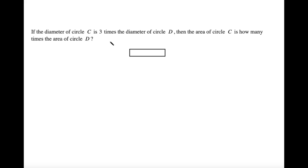If the diameter of circle C is three times the diameter of circle D, then the area of circle C is how many times the area of circle D?